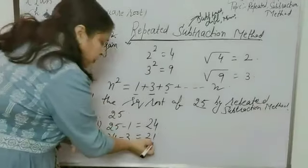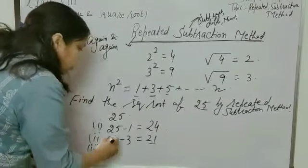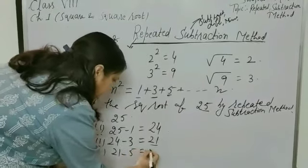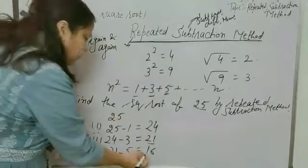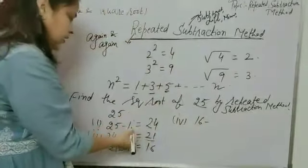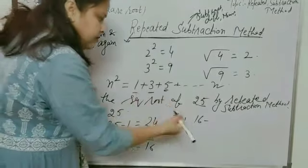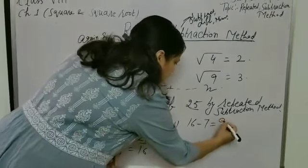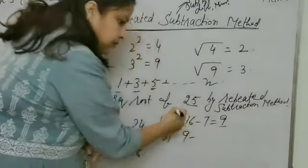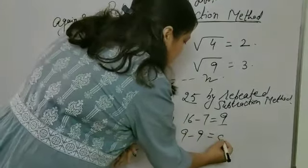Now, from this 21, we will subtract the next odd natural number, which is 5. And the answer will be 16. Now, from this 16, we will subtract the next odd natural number, which is 7 — 1, 3, 5, next will be 7. 16 minus 7, which is equal to 9. Now, from this 9, we will subtract the next odd natural number, which is 9. And 9 minus 9 will be 0.